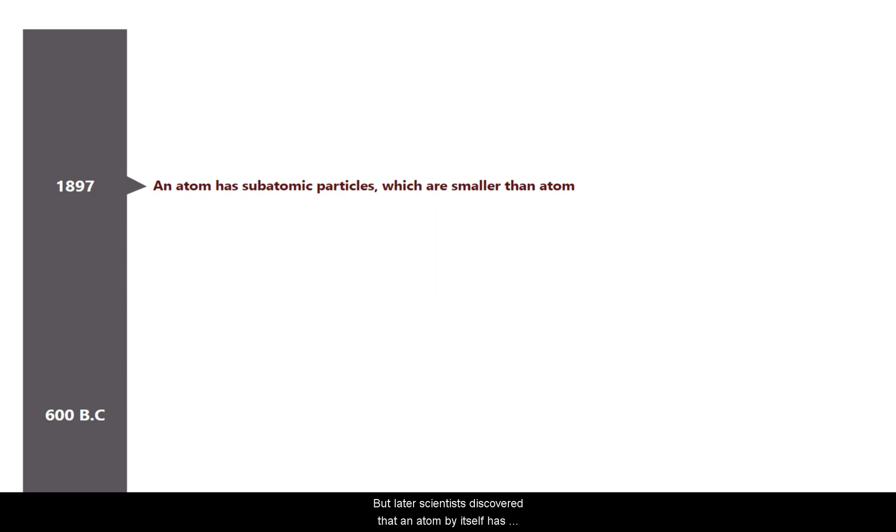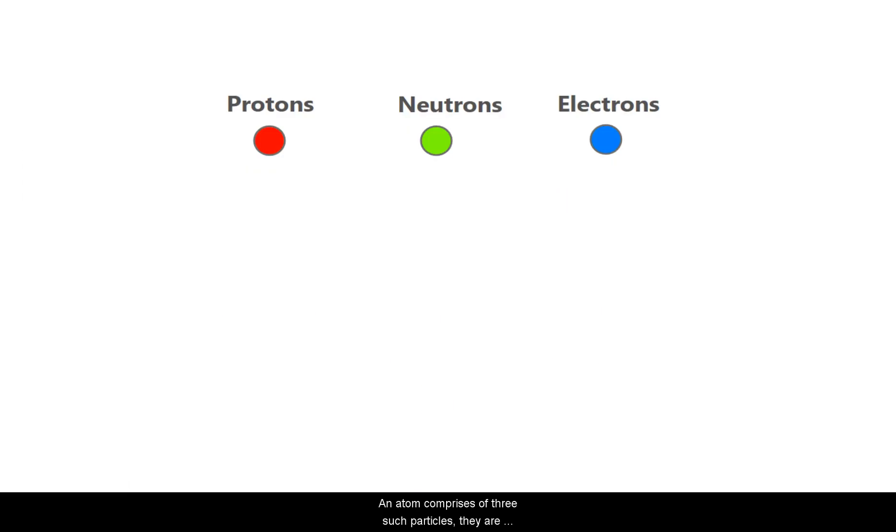But later, scientists discovered that an atom by itself has even more smaller particles inside it. And these particles are called subatomic particles. An atom comprises of three such particles. They are protons, neutrons and electrons. A proton is positively charged particle, electron is negatively charged particle and a neutron is neutral charged.